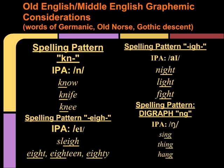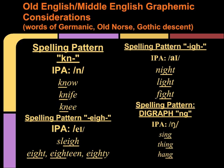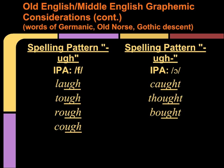Let's begin by looking at some words from Old English and Middle English. We have referenced spelling patterns K-N with the IPA N, such as in 'no,' 'knife,' and 'knee.' We also have patterns such as E-I-G-H represented by the IPA symbol A, as in 'slay,' 'eight,' 'eighteen,' and 'eighty.' We also have I-G-H representing the diphthong I, as in 'night,' 'light,' and 'fight.' And the digraph N-G represented by the N-G symbol as in 'sing,' 'thing,' and 'hang.'